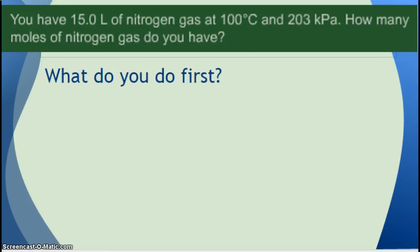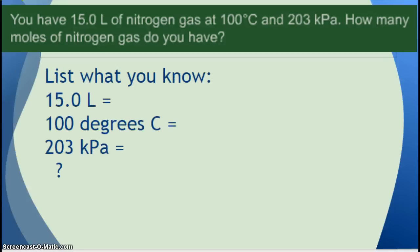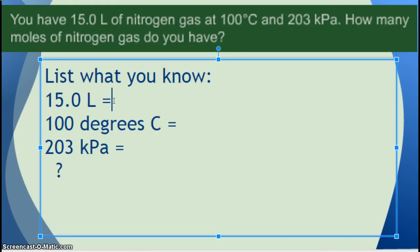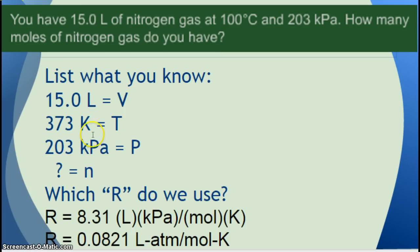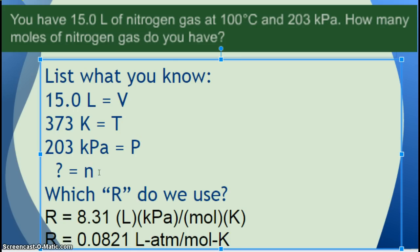So let's do an equation. You have 15.0 liters of nitrogen gas at 100 degrees Celsius and 203 kilopascals. How many moles of nitrogen do you have? What do we do first? First thing is list everything you know. So I listed out all the numbers. And then after you make a list of the numbers, you need to decide what they stand for. So liters is what? Volume. Celsius is temperature. Kilopascals is pressure. What's wrong with our temperature? It needs to be in Kelvin. How do we go from degrees Celsius to Kelvin? We add 273. So we're going to change that to 373 Kelvin. Kelvin is our temperature. And we're solving for N for the number of moles.